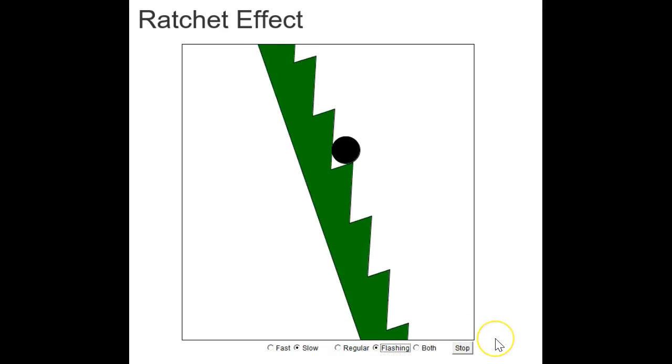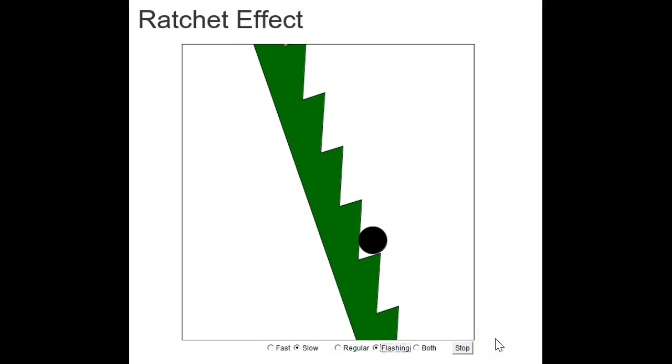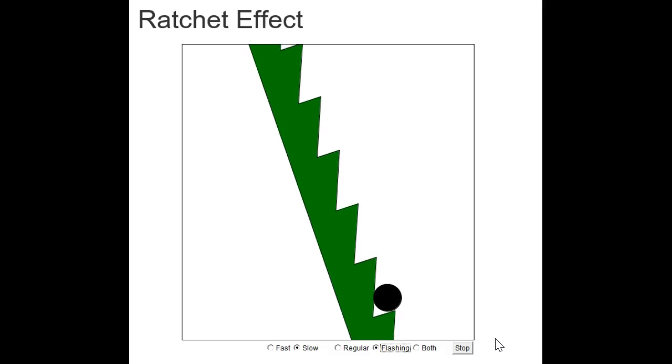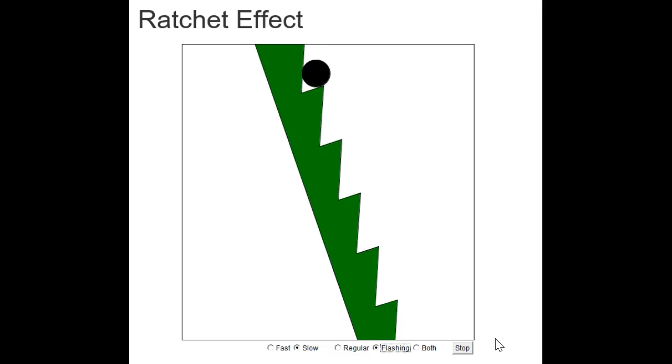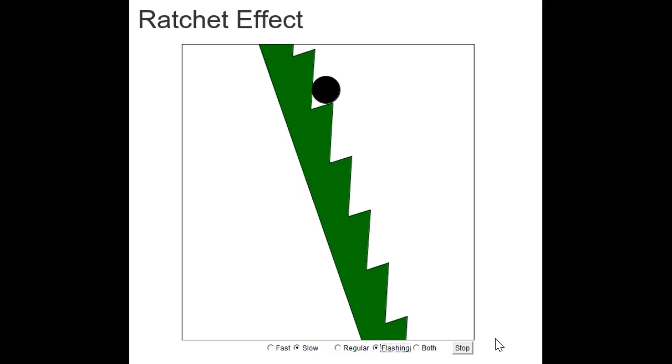And then if I click over here, here's flashing. So the ball is also moving down, but you can see it's a little different, right? But I think that's sort of an optical way of understanding game B—you can go up, but most of the time you go down.